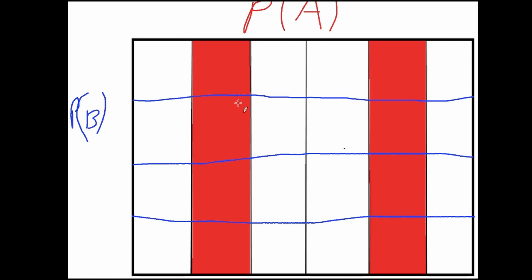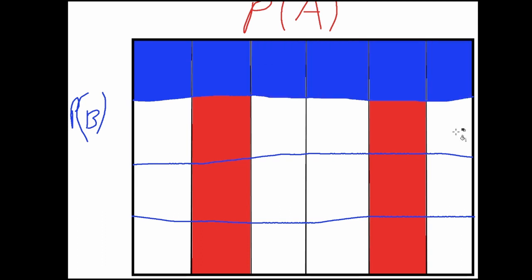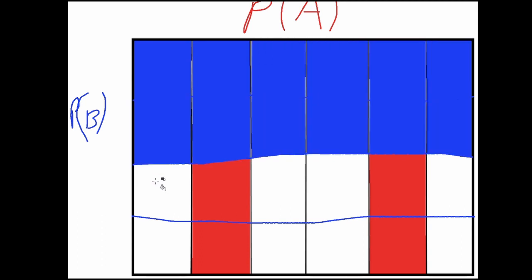Now highlighting three of the areas, which results in this area being highlighted, this area being highlighted, and one of these two—let's choose this one to be highlighted.